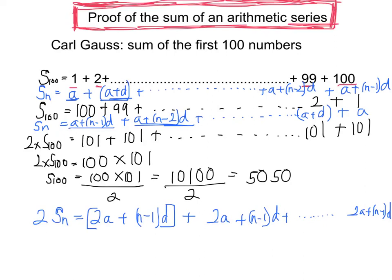So how many lots of these have I got? They're all the same. Well, I've got n lots, so I've got n lots of 2a plus n minus 1d.